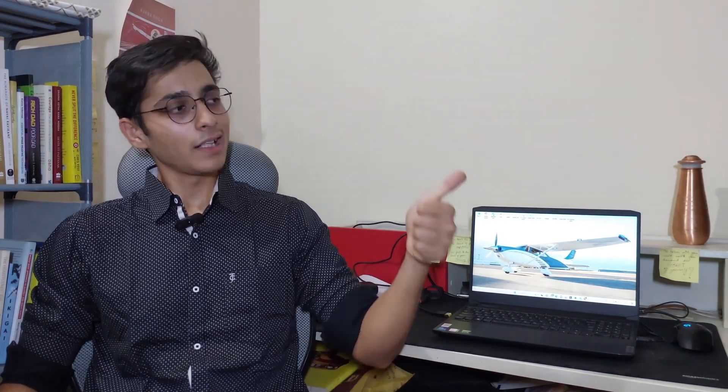Once your form is submitted, you need to wait. For example, for a February attempt, at least 15 to 20 days before the examination date, WPC issues a list of admitted candidates on its official website — you can see a list like this on your screens right now. We keep updating these on our WhatsApp group. Around 3,000 to 3,500 candidates apply for a single attempt.